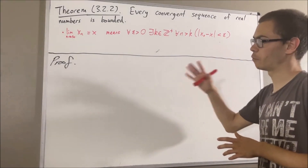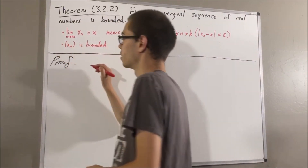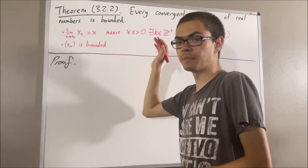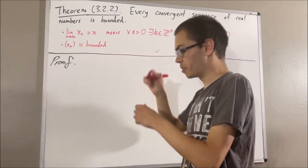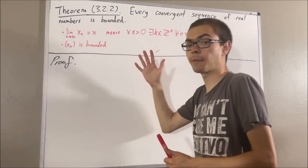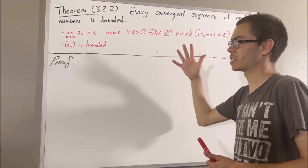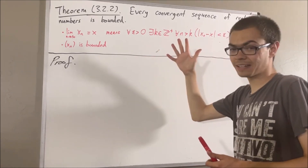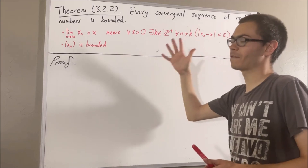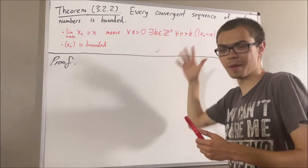And next, let's recall what a bounded sequence is. To say that xn is bounded means there exists a positive real number capital N, such that for all positive integers n, the absolute value of xn is less than or equal to capital N.